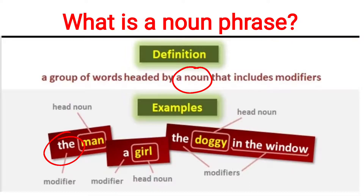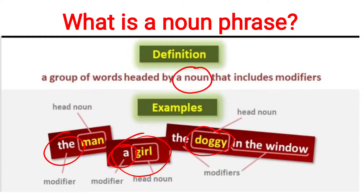As we all know, 'the' is a definite article, meaning we are talking about a definite or specific man. Similarly, in 'a girl', girl is the head noun and the article 'a' is attributing it or adding more sense to the noun. In the third example, 'the doggy in the window', the head noun doggy is highlighted because it is the main noun, and the rest of the words are modifiers.